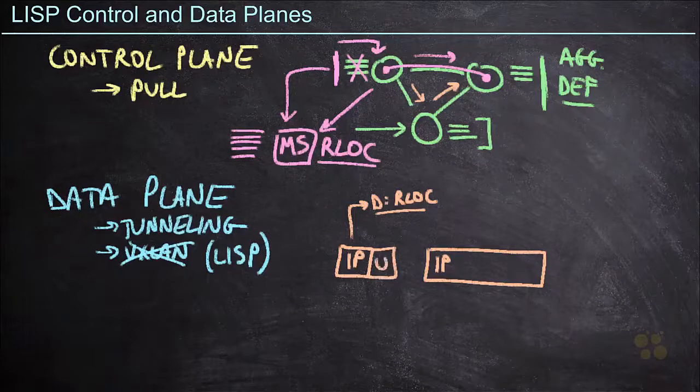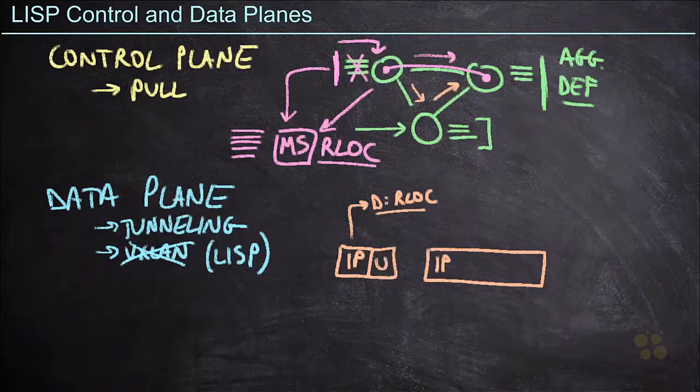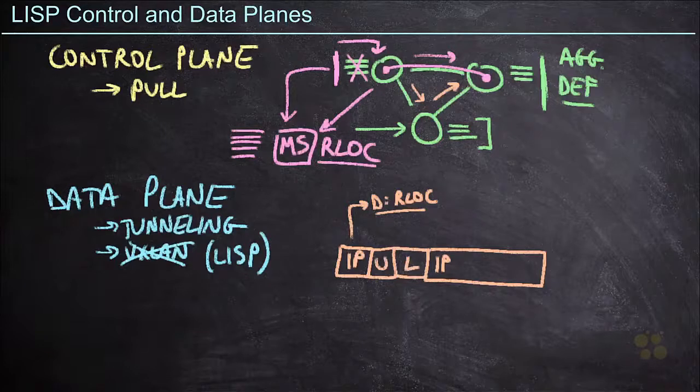Now, inside of this, we're going to have a UDP header as well, because we're running LISP on UDP. And then we have the LISP header itself. Now, a few things to know about this particular tunneling mechanism.